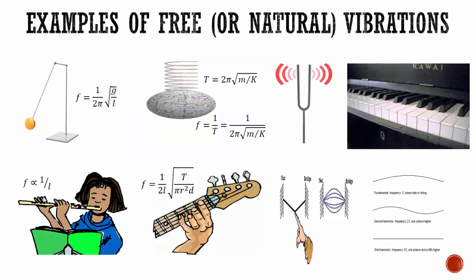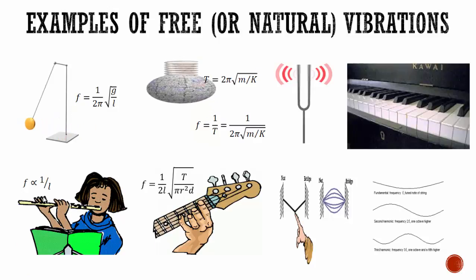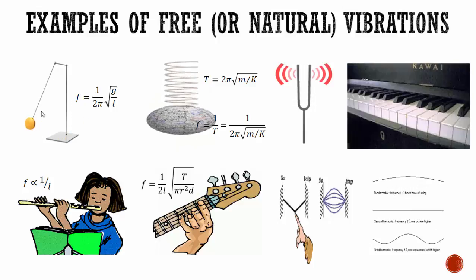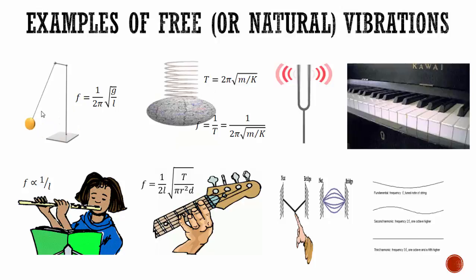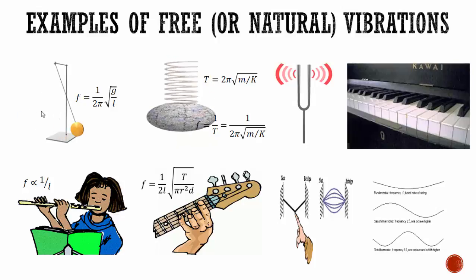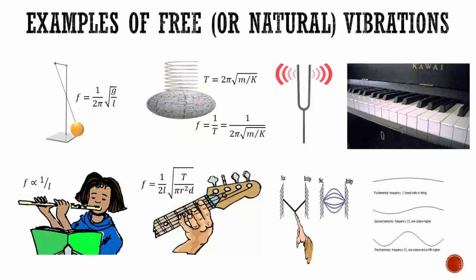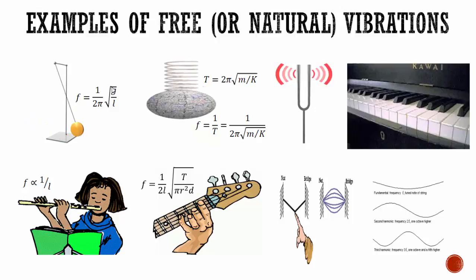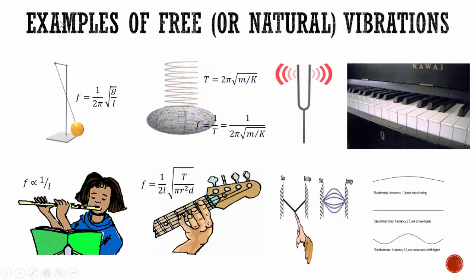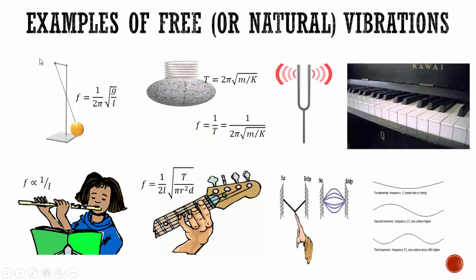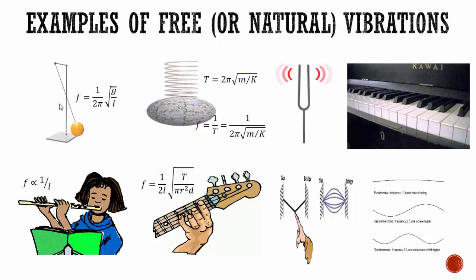Examples of free or natural vibrations: if the bob of a simple pendulum is displaced slightly from its mean position, it starts vibrating with its natural frequency. The natural frequency depends on the length L of the pendulum, since g is constant (9.8 m/s²) and 2π is constant. Frequency is inversely proportional to length, so if the length is shortened, it will have a different natural frequency. Different pendulums will vibrate with different natural frequencies depending on their length.